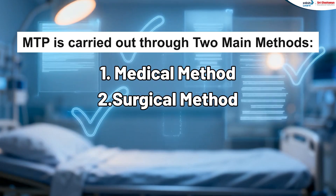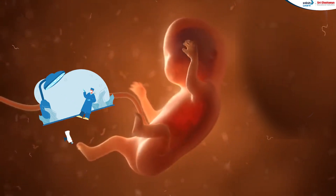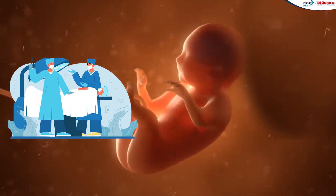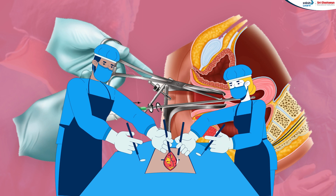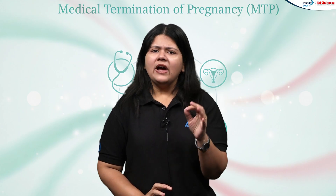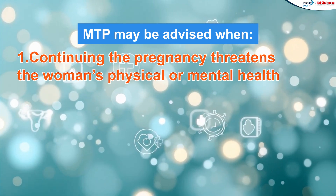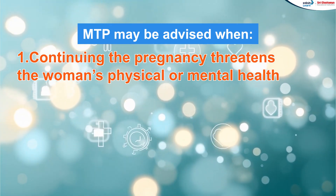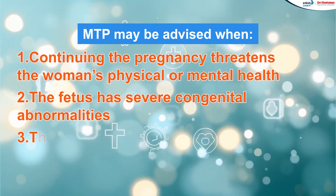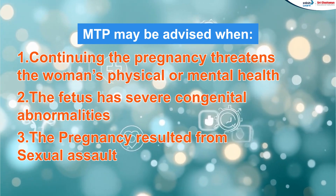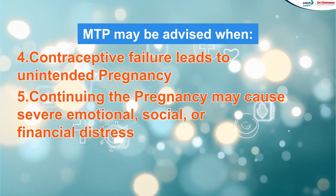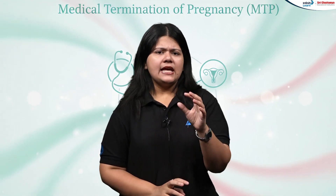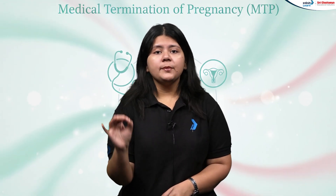The second method is the Surgical Method, used when medical methods are unsuitable or when the pregnancy is more advanced. Procedures like vacuum aspiration or dilation and evacuation are performed in approved centers by trained specialists. When done correctly, both methods are highly safe and reliable. MTP may be advised when continuing the pregnancy threatens the woman's physical or mental health, when the fetus has severe congenital abnormalities, when the pregnancy resulted from sexual assault, when contraceptive failure leads to unintended pregnancy, or when continuing may cause severe emotional, social, or financial distress. MTP supports a woman's health, autonomy, and overall well-being.